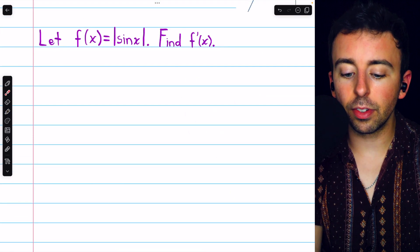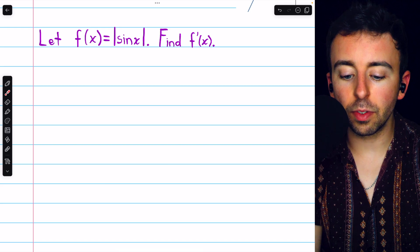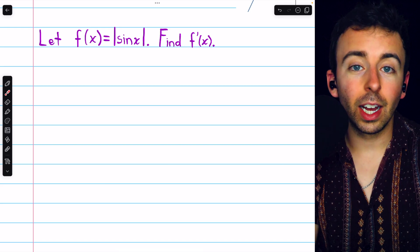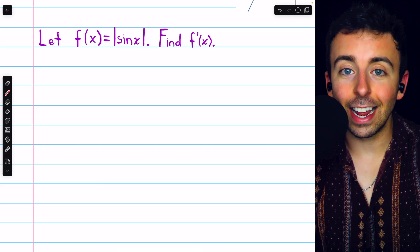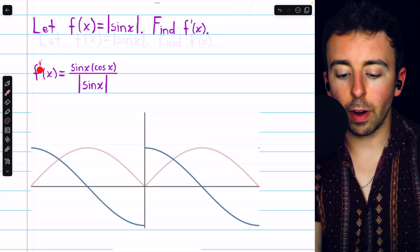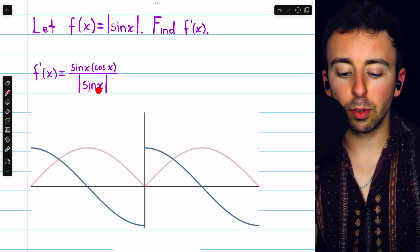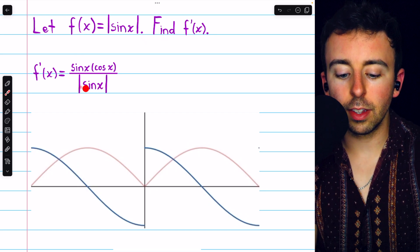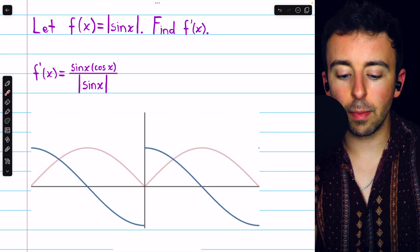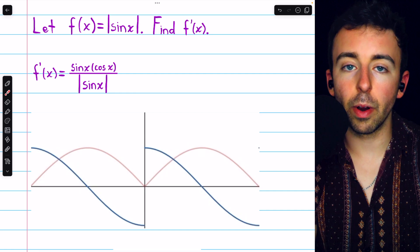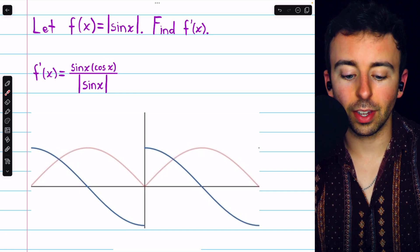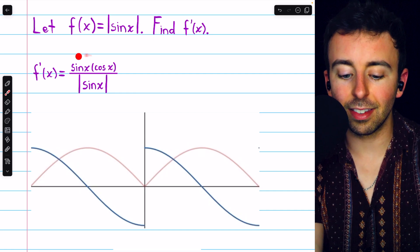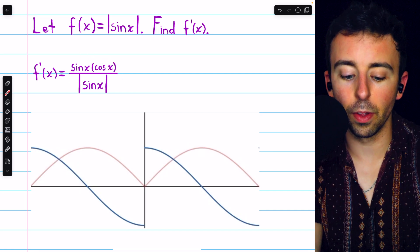One more example for you to try: f of x equals the absolute value of sine x — find the derivative. The answer is just the absolute value function in the denominator, the insides in the numerator, multiplied by the derivative. The derivative of sine x is cosine x, so that's the derivative of the whole thing.